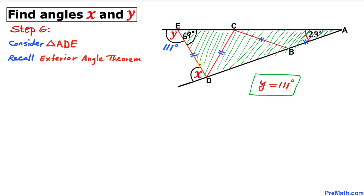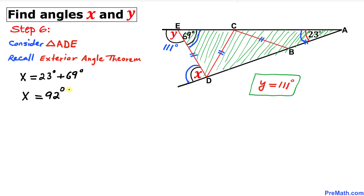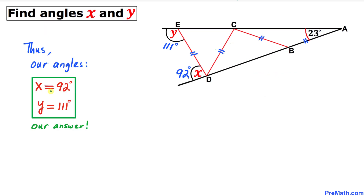For our final step, let's consider triangle ADE and recall the exterior angle theorem. We can see that x is the exterior angle, equal to the sum of the two opposite interior angles: x equals 23 degrees plus 69 degrees, which gives us 92 degrees.